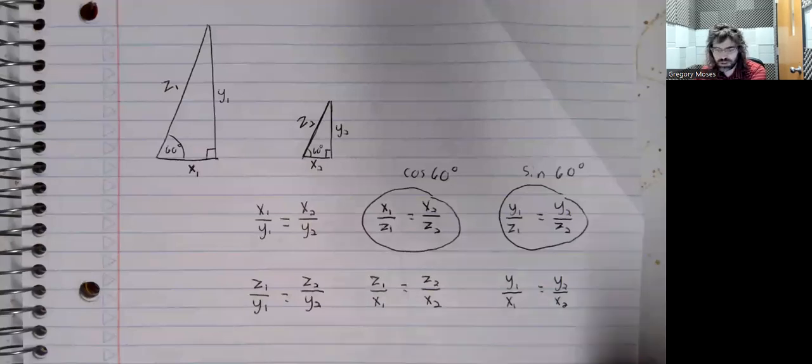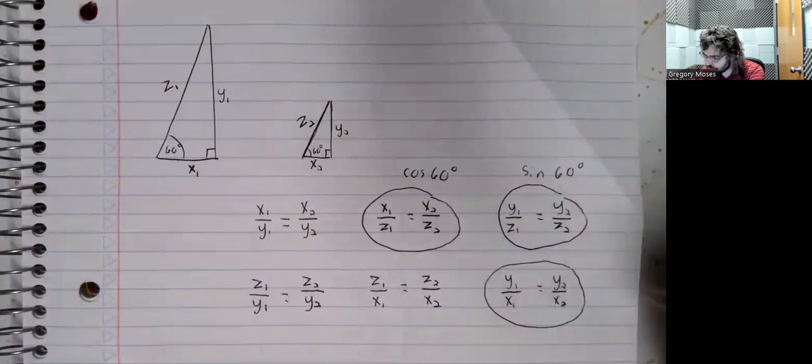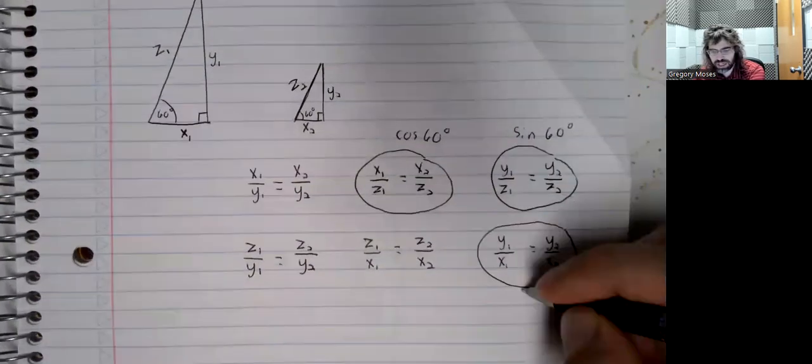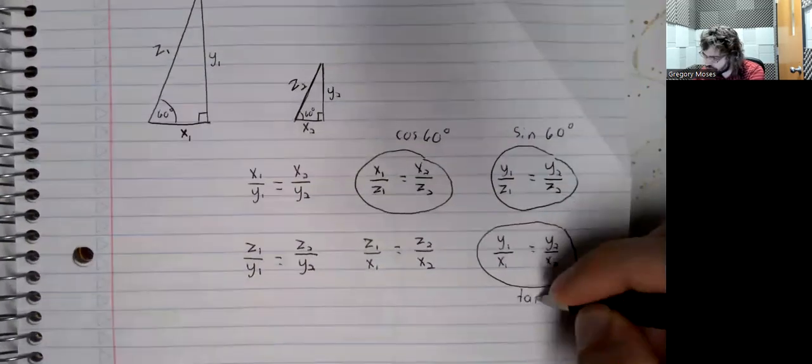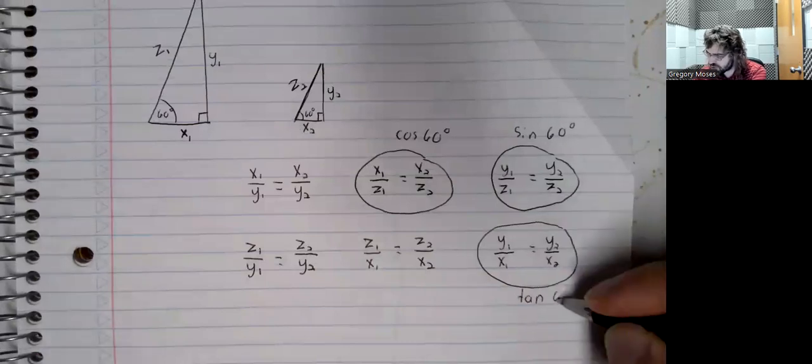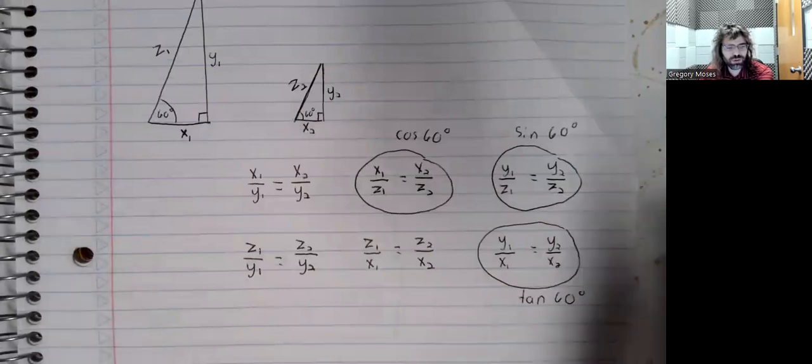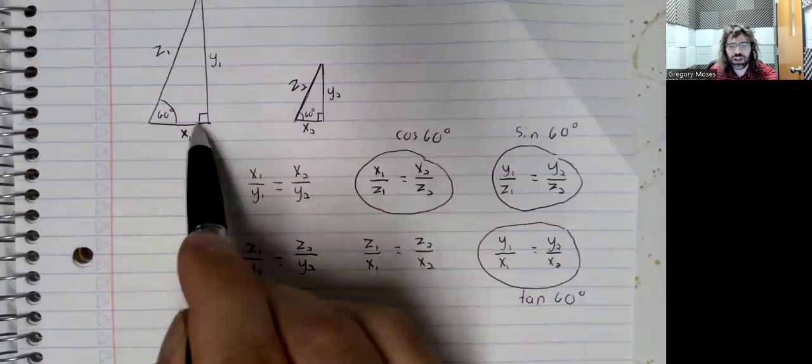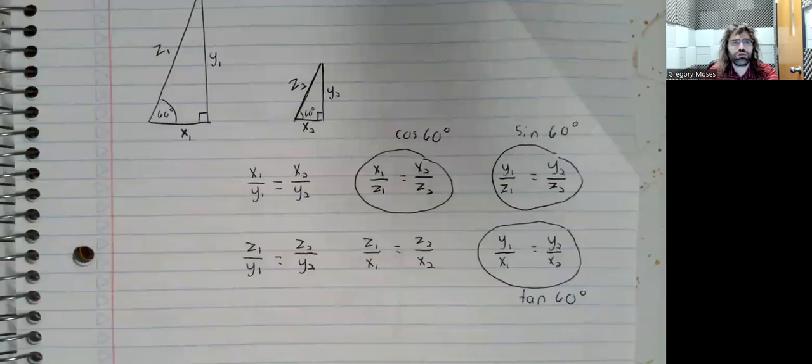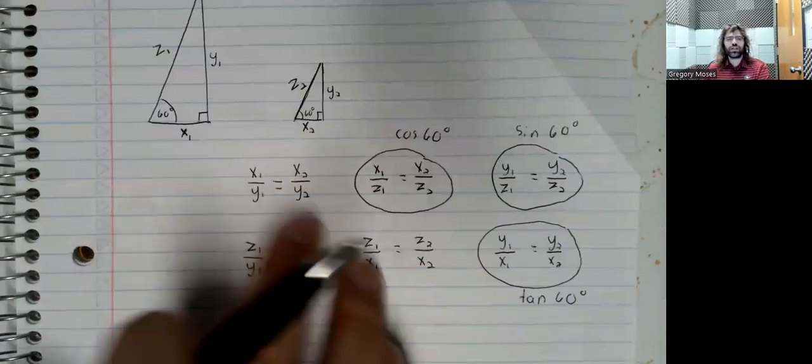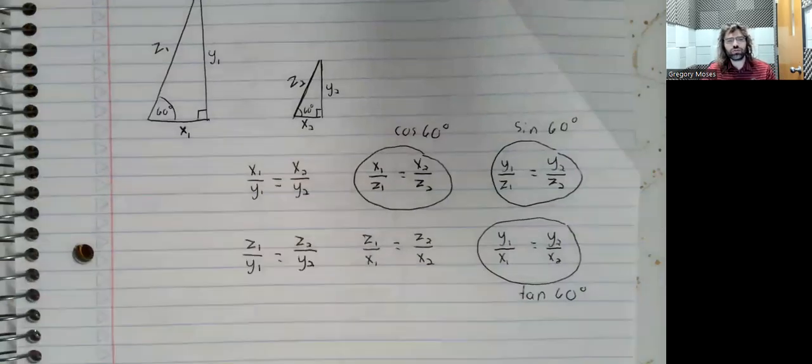This ratio is the tangent of 60 degrees, the opposite side over the adjacent side. So the remaining trig functions, which are called the secant, the cosecant, and the cotangent, are merely the remaining ratios that we haven't given names to yet.